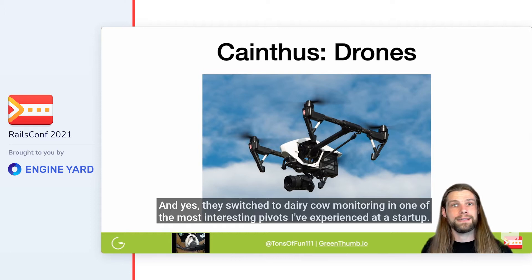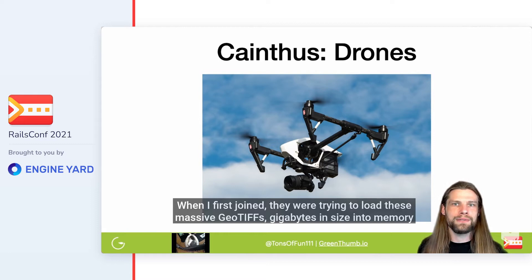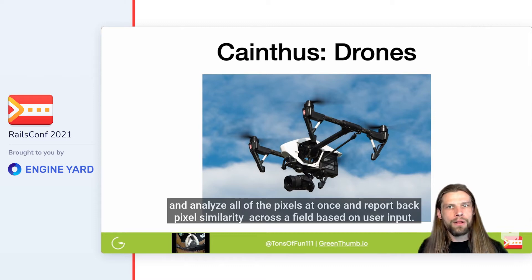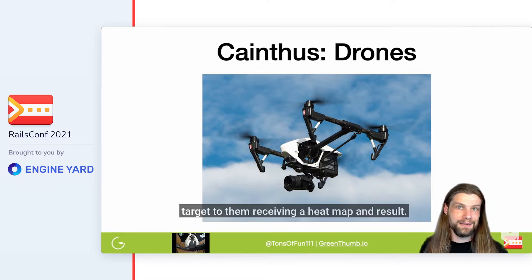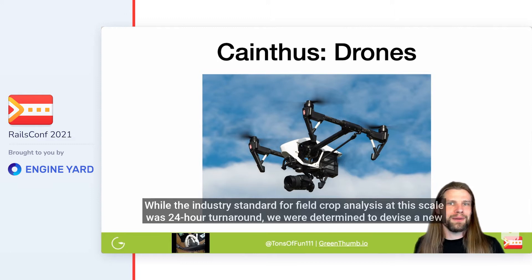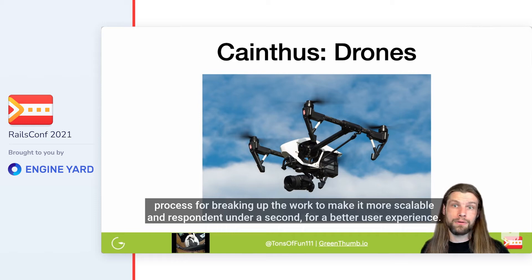They switched to dairy cow monitoring in one of the most interesting pivots I've experienced at a startup. When I first joined, they were trying to load these massive GeoTIFFs — gigabytes in size — into memory and analyze all of the pixels at once and report back pixel similarity across a field based on user input. The only problem was that it took seven minutes from when the user selected a target to them receiving a heat map. While the industry standard for field crop analysis at this scale was a 24-hour turnaround, we were determined to devise a new process for breaking up the work to make it more scalable and respond in under a second.